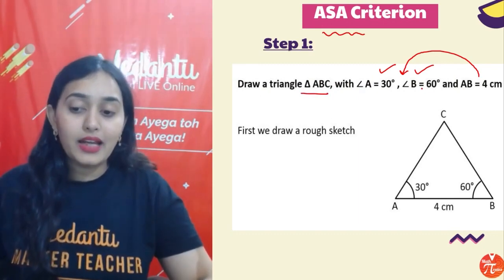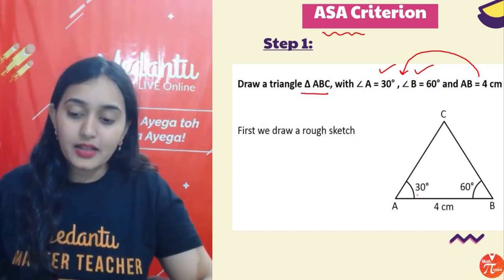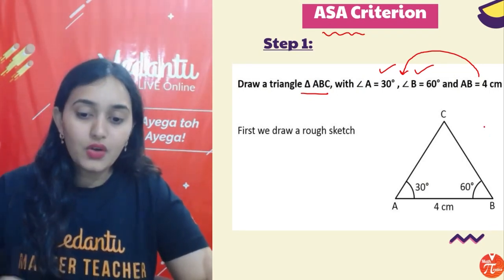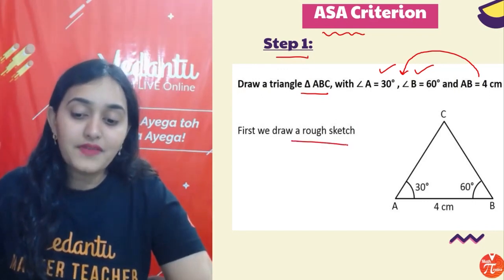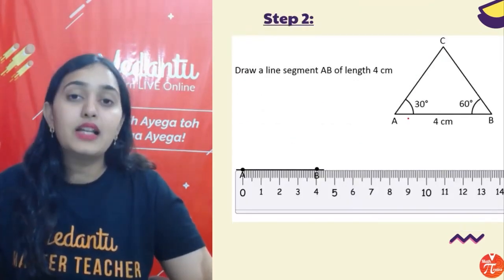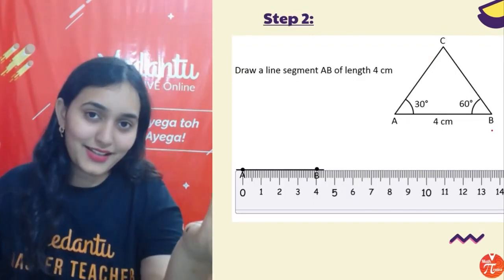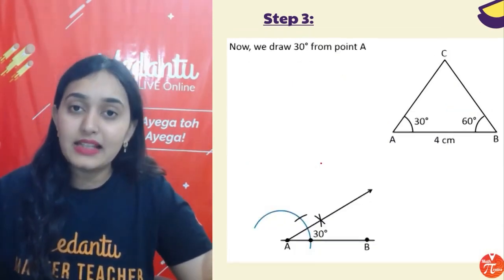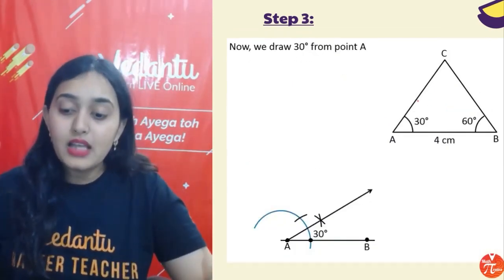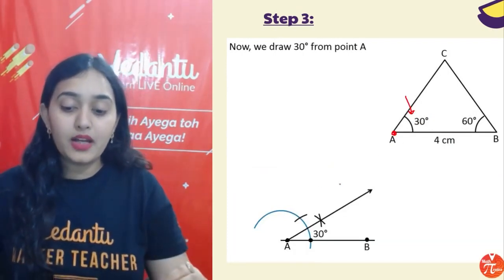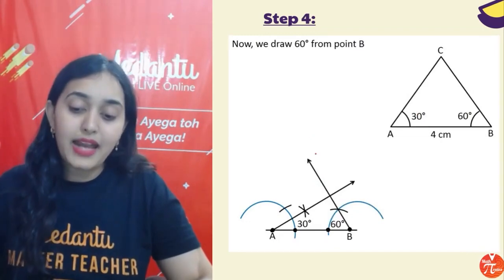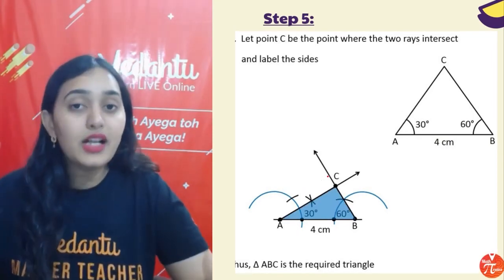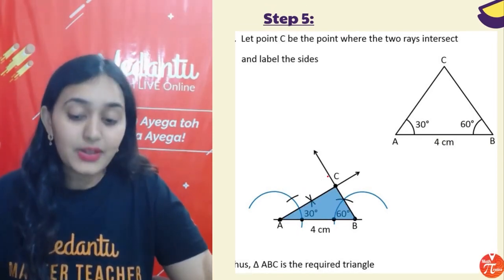Let's take an example: triangle ABC where angle A is 30°, angle B is 60°, and the side between them, AB, has a value of 4 cm. Step one is always to draw a rough sketch. Step two — the easiest part of ASA criteria — first draw the given side using a scale, then construct the first angle at one endpoint, then construct the second angle at the other endpoint. The two rays will meet at point C, giving you the triangle.